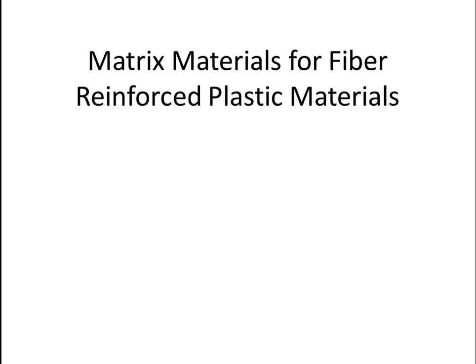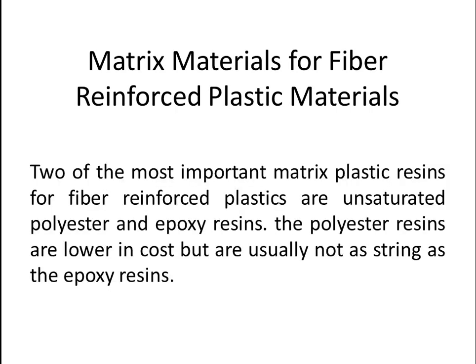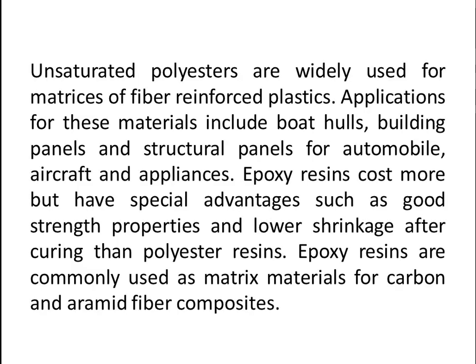Now let's talk about matrix materials for fiber reinforced plastic materials. Two of the most important matrix plastic resins for fiber reinforced plastics are unsaturated polyester and epoxy resins. Polyester resins are lower in cost but are usually not as strong as epoxy resins. Unsaturated polyesters are widely used as matrices for fiber reinforced plastics, with applications including boat hulls, building panels, and structural panels for automobiles, aircraft, and appliances. Epoxy resins cost more but have special advantages such as good strength properties and lower shrinkage after curing. Epoxy resins are commonly used as matrix materials for carbon and aramid fiber composites.